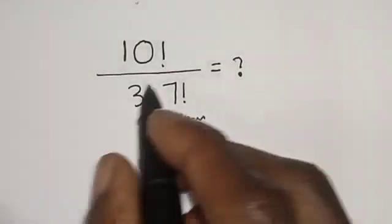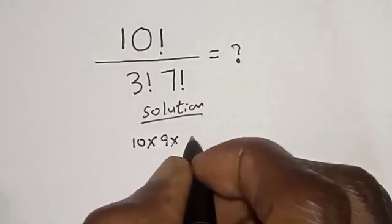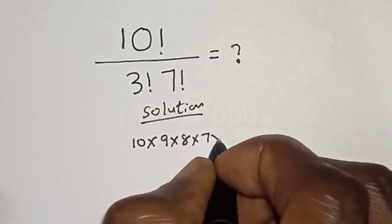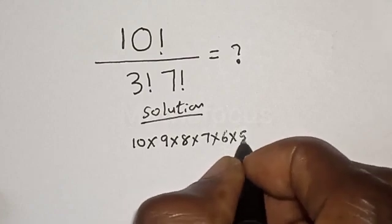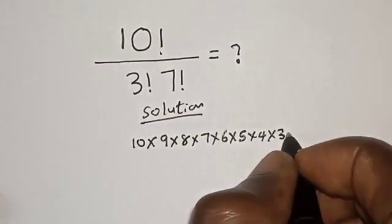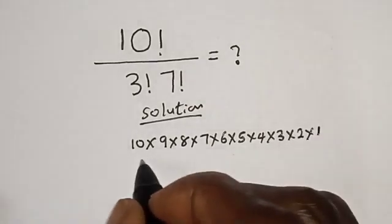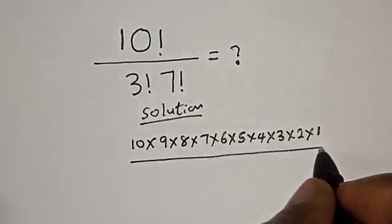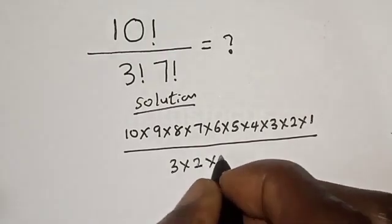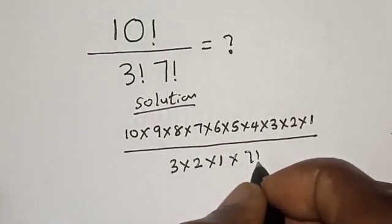10 factorial can be expressed as 10 times 9 times 8 times 7 times 6 times 5 times 4 times 3 times 2 times 1, then over 3 factorial. 3 factorial is 3 times 2 times 1, times 7 factorial.